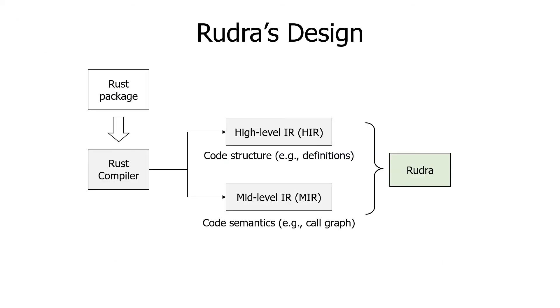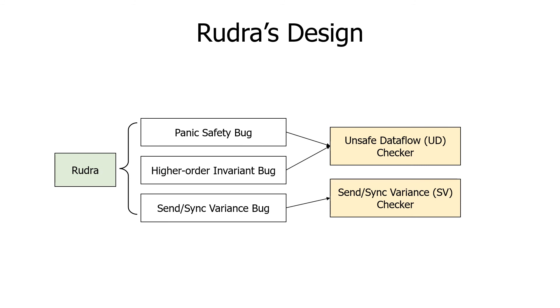Rudra works as a custom Rust compiler. It extracts two internal IRs from the original Rust compiler. It uses high-level IR, HIR, to extract code structure such as type and function definitions and the location of unsafe blocks. And it uses mid-level IR, MIR, to extract code semantics such as code dependencies. Then, Rudra uses these two IRs to detect the three bug patterns. It implements two core algorithms: the unsafe data flow checker and the send-sync variance checker.